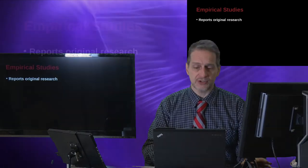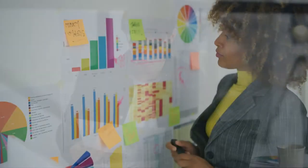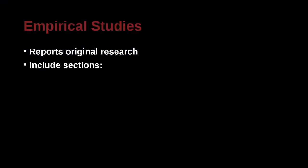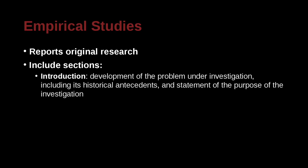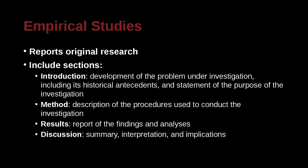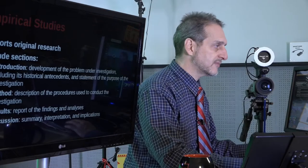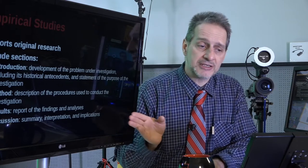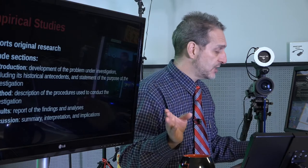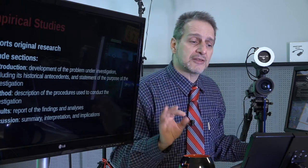Empirical means that you're doing some kind of original research. You're actually looking at source material, doing some kind of test, a survey, or some kind of experimentation in a lab. If you do an empirical study, the parts of your thesis or research paper would include things like an introduction, a methodology section, a results section, and a discussion section.